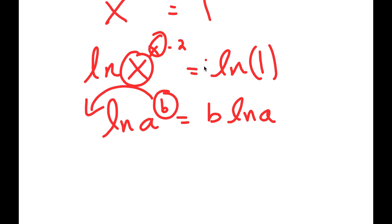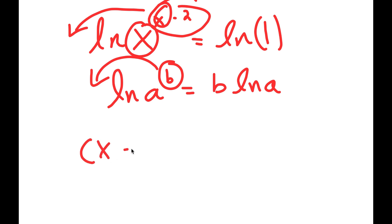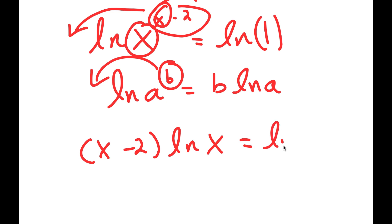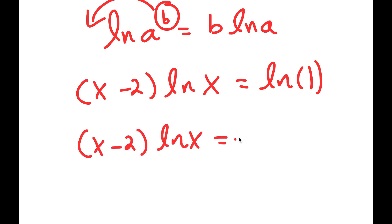So over here I have ln of x to the power of x minus 2, and I can move x minus 2 to the front, so then x becomes a normal term, which makes it much easier for us to solve. If I move x minus 2 to the front, I get x minus 2 times ln x is equal to ln 1. Now, ln of 1 is equal to 0, so I get x minus 2 times ln x is equal to 0.